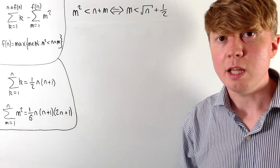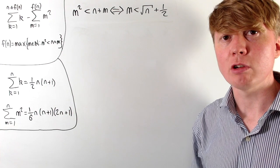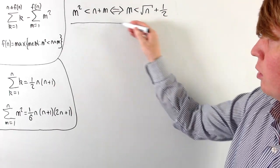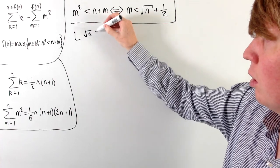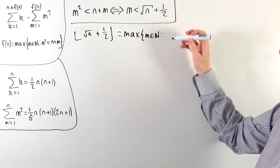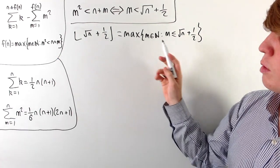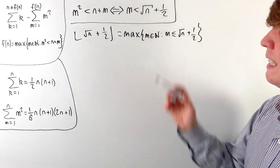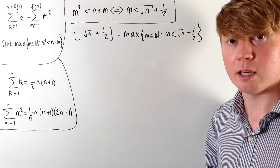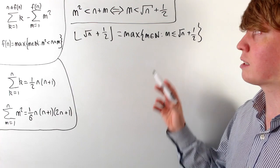So f(n) is the largest integer m such that m < √n + 1/2. This looks very much like the floor function: floor(√n + 1/2) is the largest integer m such that m ≤ √n + 1/2. The only subtle difference is that we need m strictly less than √n + 1/2, but these two agree as long as √n + 1/2 is not an integer.